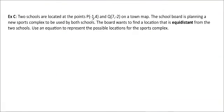Two schools are located at the points P(-1,4) and Q(7,-2) on a town map. And the school board is planning a new sports complex to be used by both schools. The board wants to find a location that is equidistant from the two schools. So equidistant means equally distant. It's the same distance between the two of them. And it doesn't mean that it has to be the midpoint.